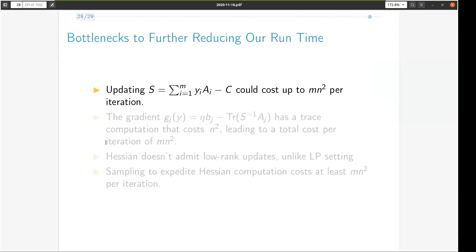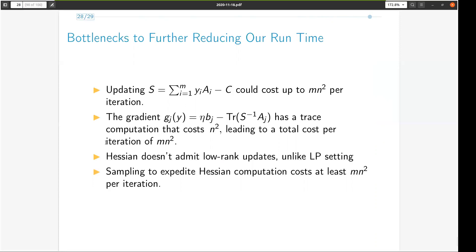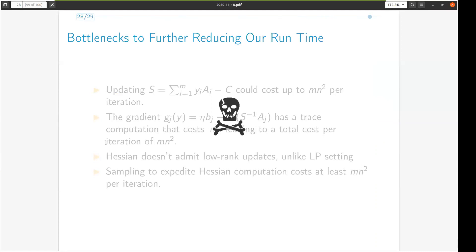Finally, recall the mn-square term that shows up in each iteration in the final runtime. We believe that it's quite hard to get rid of this term, because it can come either from the slack or the gradient computations. And further, sampling the Hessian to make its computation fast also incurs a cost of mn-square. So, all these seem like dead ends to improving our runtime. And we believe that any further improvements to this result would come from other novel ideas.